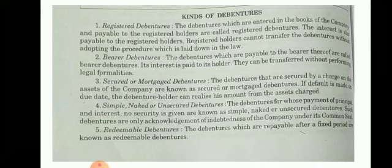Registered debentures are recorded in the books of the company and are payable to the registered holder. Interest is also payable to the registered holder. The registered holder cannot transfer the debenture without adopting the procedure laid down in the articles of association.